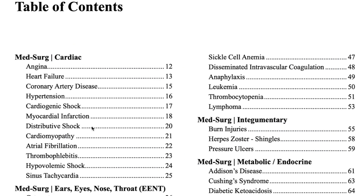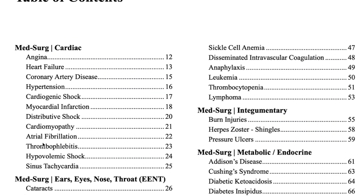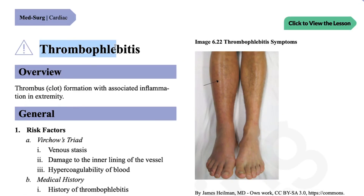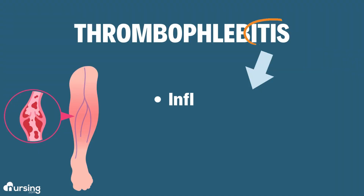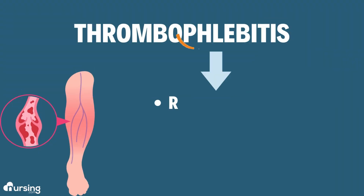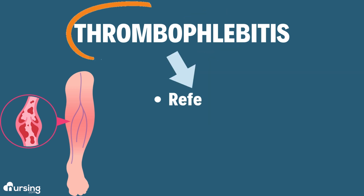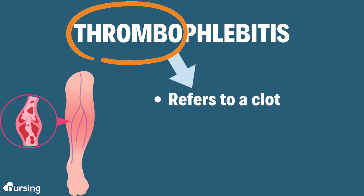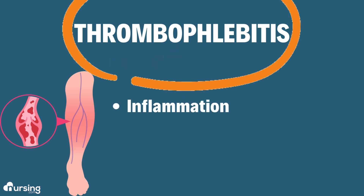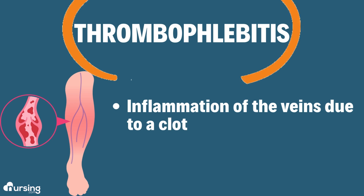Let's talk about thrombophlebitis. First, let's break down this word. We know that '-itis' means inflammation. So what about 'phleb'? If you think about the word phlebotomy, it's referring to the veins. And then 'thrombo' refers to a thrombus, or a blood clot. So thrombophlebitis is inflammation of the veins due to a clot.